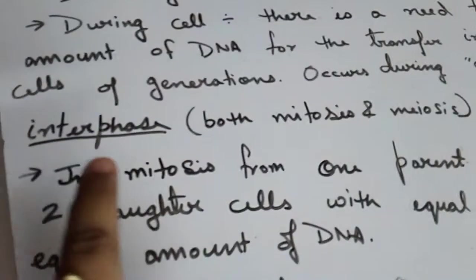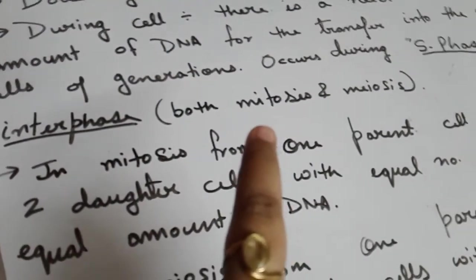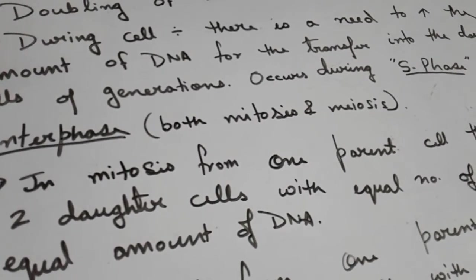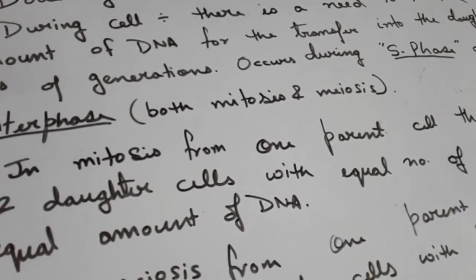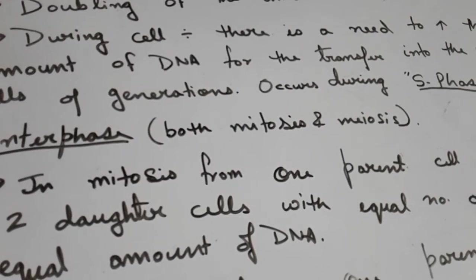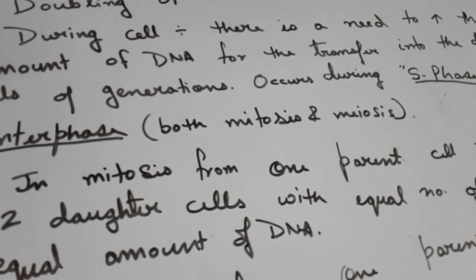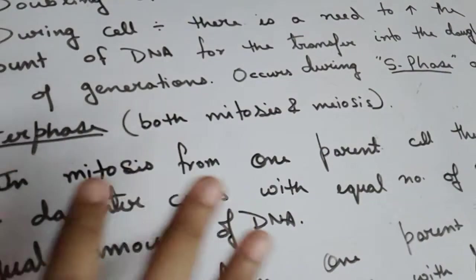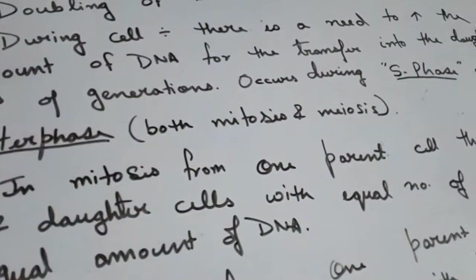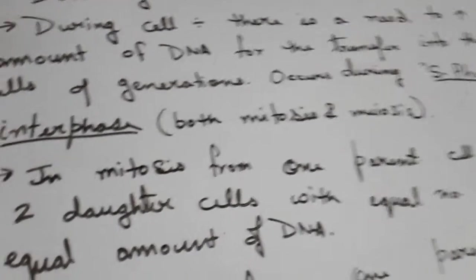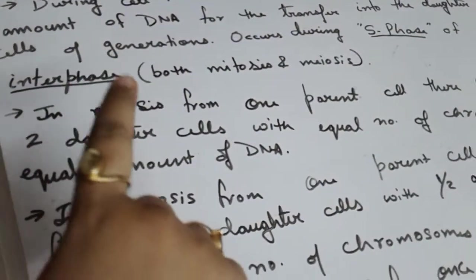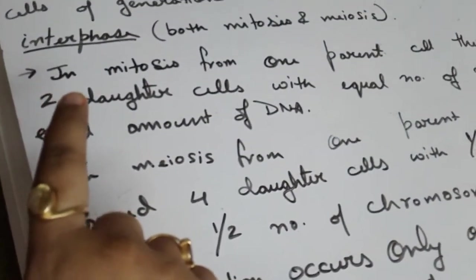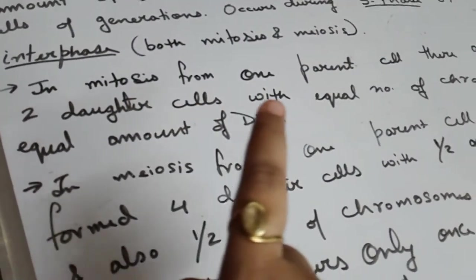This duplication of DNA occurs during the S phase of interphase, both for mitosis and meiosis. If you know about the S phase which takes place during interphase, the first point to note is that DNA duplication takes place during the S phase of interphase for both mitosis and meiosis.